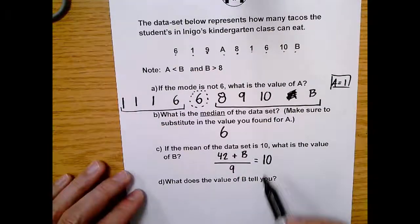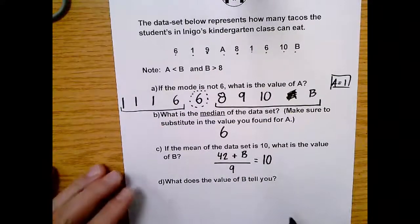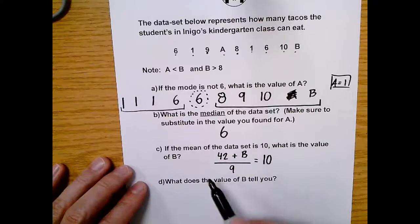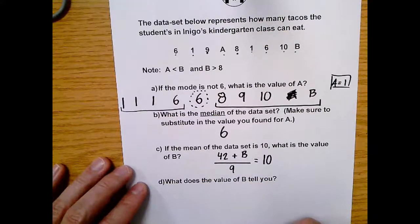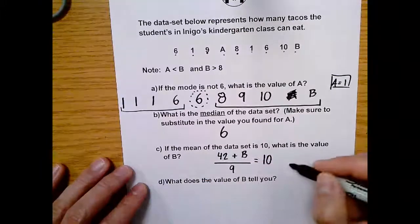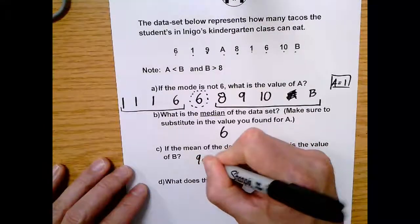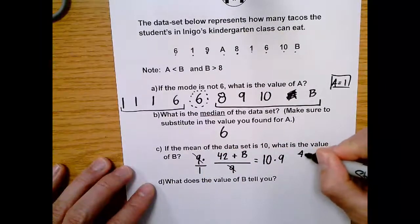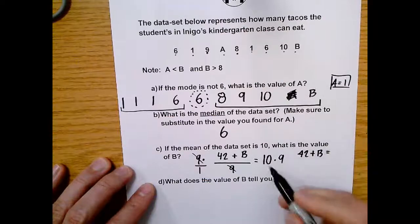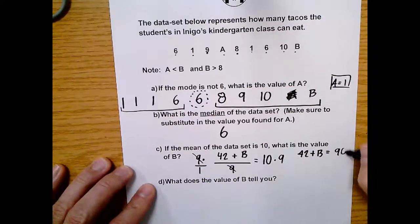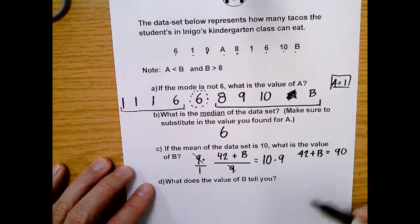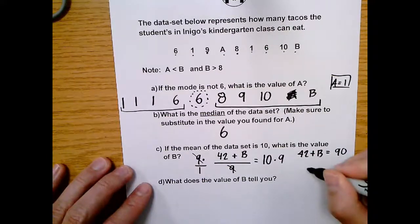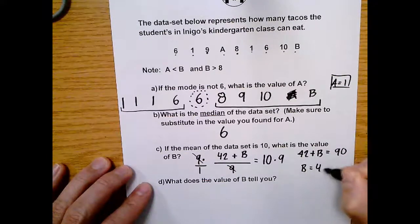Okay. The next step is just algebraic in nature. We just multiply both sides by nine to get rid of this denominator of nine. So if I multiply both sides by nine, those nines cancel. I just multiply both sides by nine. So those nines cancel. And then you get 42 plus B equals 10 times nine is 90. And then we just subtract 42 from both sides. So 90 minus 42 is 48. So you have B is 48.